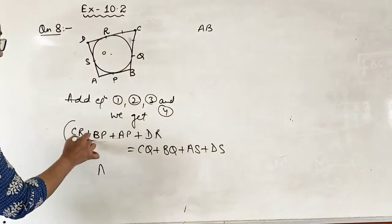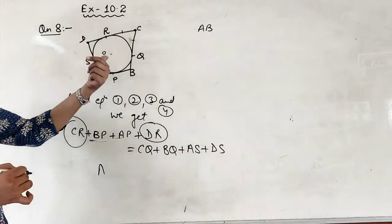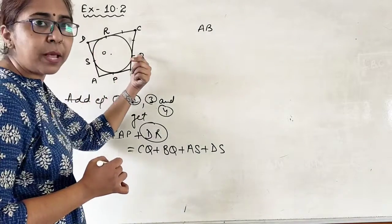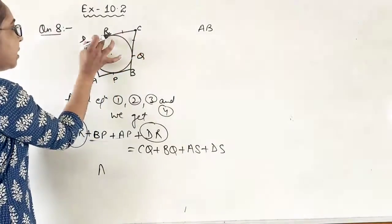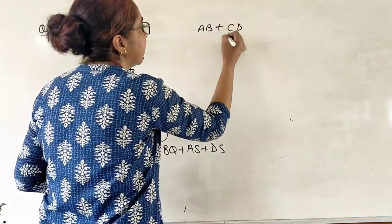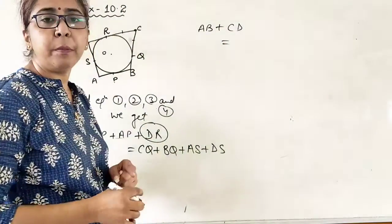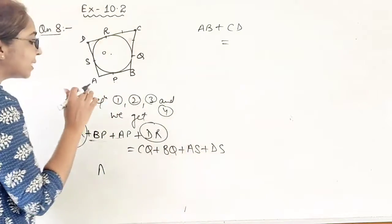Now we are left with CR and DR. CR plus DR from the figure, can you tell me what is CR plus DR? This is CR, DR. So it will be CD. So these 4 line segments now will be equal to AB plus CD.